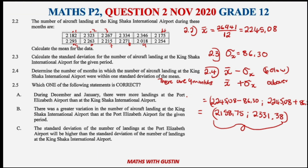Please also go and watch Question 2 from November 2021 and 2022 — they are within this playlist and should help clarify this concept further. Now let's move on to 2.5, which says: which of the following statements is correct? Statement A: during December and January there were more landings at Port Elizabeth airport than at King Shaka.